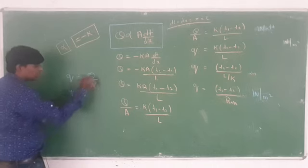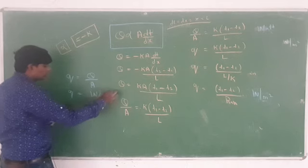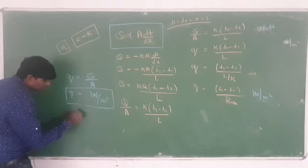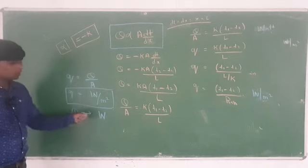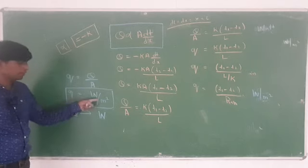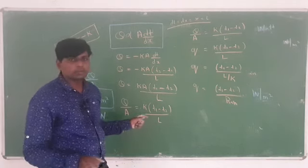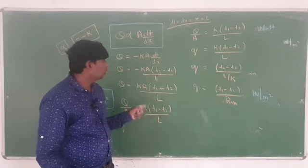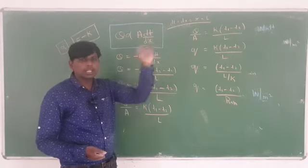So small q = (T1 - T2) / Rth. This is the Fourier law of heat conduction. You have to remember the unit of capital Q and small q. The reason for explaining this derivation multiple times is that more than 20 problems are based on this formula alone.